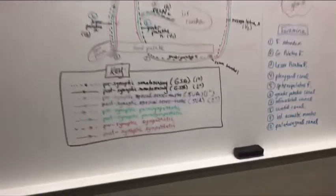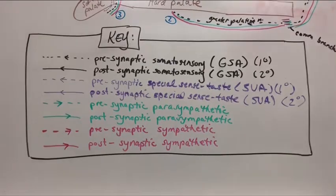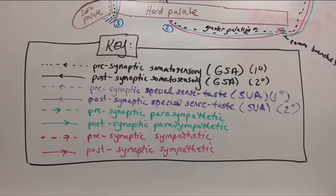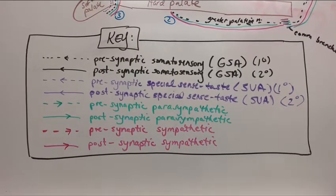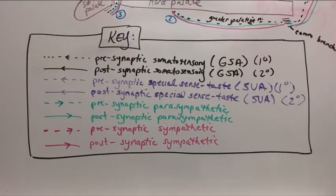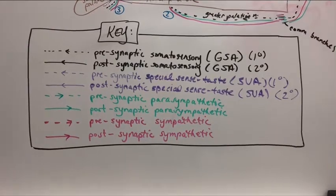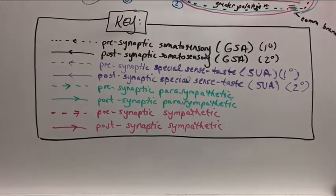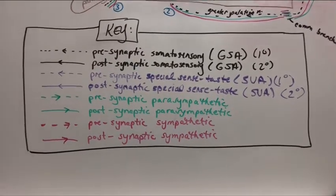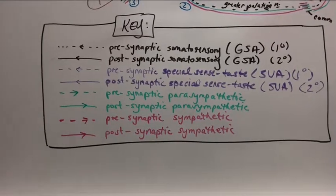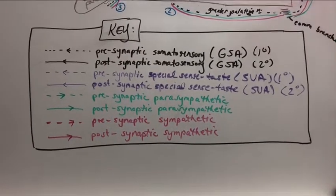As I zoom in here, I wanted to show you that I've made a key. I apologize to those who may be colorblind - I did the best I could to pick some neutral-ish colors, at least different shades, so you could discern the difference. The dotted line with the arrow pointing to the left is for presynaptic somatosensory, which is general sensory afferent - your light touch, two-point discrimination, pain and temperature. Your first-order neuron is located here, and we also have a solid line for post-synaptic somatosensory, general sensory afferent, which is your second-order neuron.